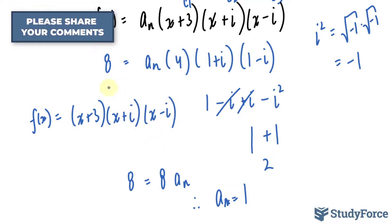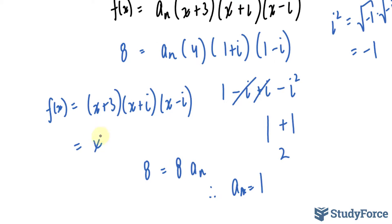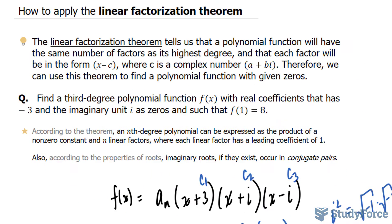As a final touch, I'll expand all of this out, and if you expand it correctly, you should end up with the following expression: x^3 + 3x^2 + x + 3. And there you have it. That is how to apply the linear factorization theorem.